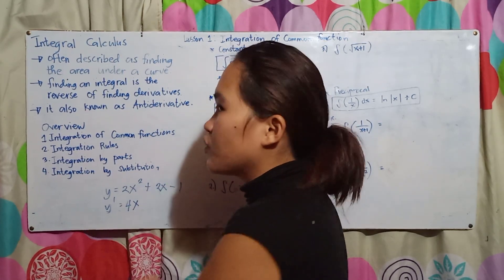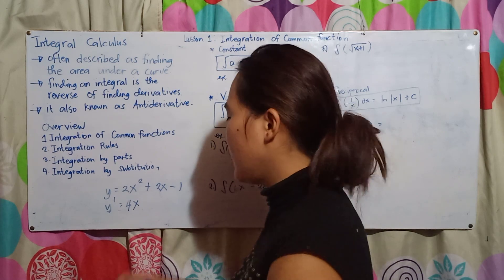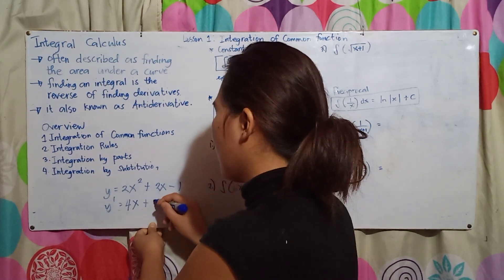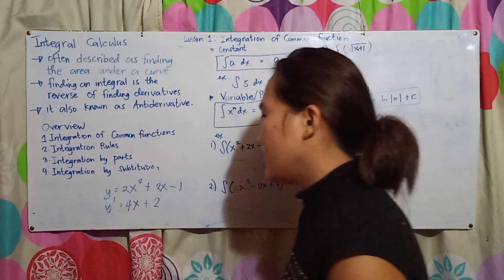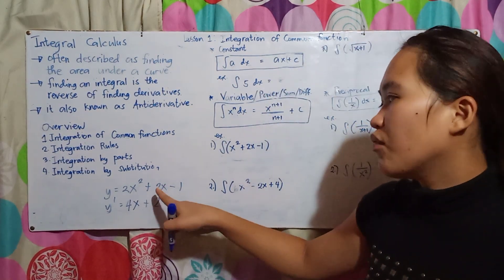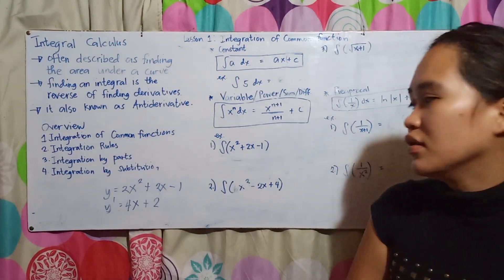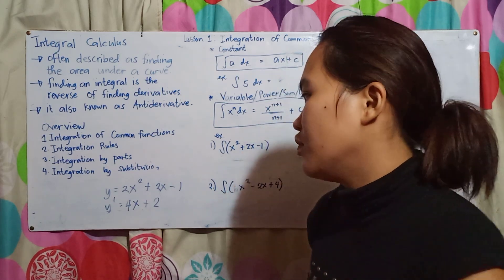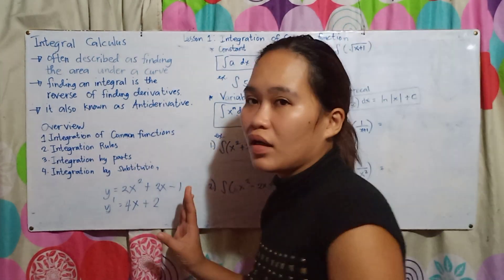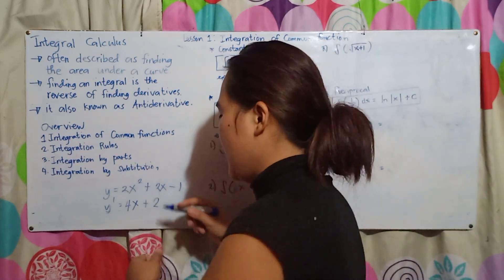Continuing the derivative: 4x (since 2−1=1), plus 2 (since the exponent of 2x becomes 0, leaving just 2), and the constant −1 disappears because its derivative is 0. So the derivative is 4x + 2.